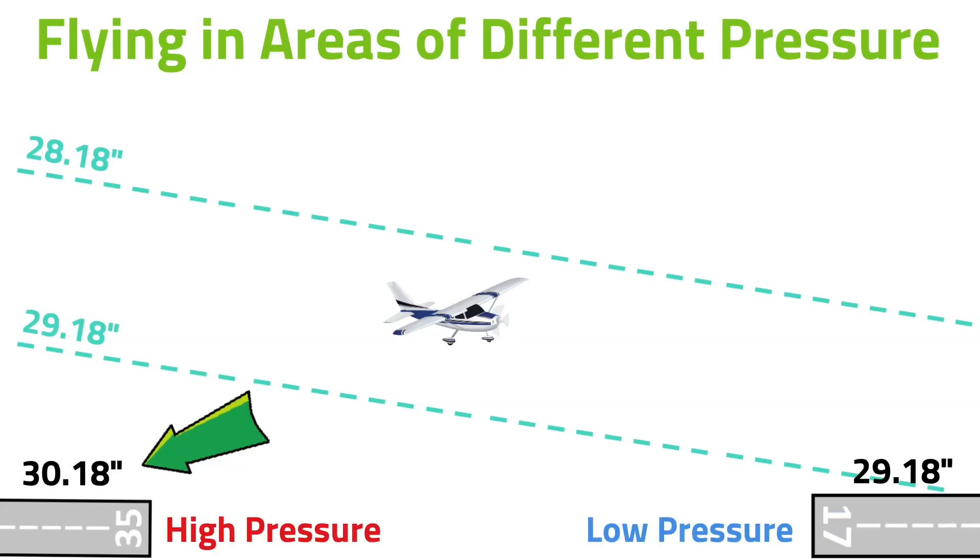One inch of mercury to be exact. And if you remember from earlier, that's a 1000 foot pressure difference so you can see how this could be a problem if you don't update your altimeter setting when you fly from one airfield to the next.